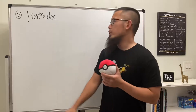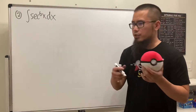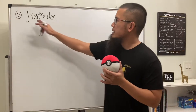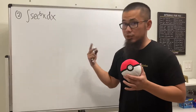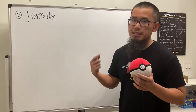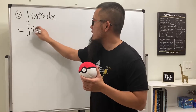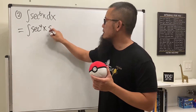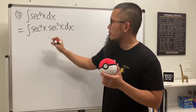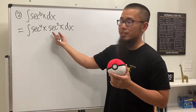For the second question, we have the integral of secant to the sixth power of x. Let's break it apart as secant to the fourth power times secant squared, because we have a nice identity whenever we see secant squared. So this becomes secant to the fourth power x times secant squared x. Hopefully we can get this in terms of tangent, since we already have a secant squared factor.